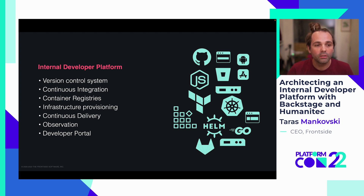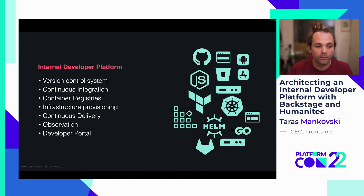That typically includes a version control system they use to push code, continuous integration pipelines they use to build container images, they push this into container registries, they provision infrastructure necessary to run their workloads, they use continuous delivery pipelines to deliver their workloads to Kubernetes, and typically they'll have observation mechanisms in place to observe the runtime execution of their workloads in the cloud. A lot of these things are visible and exposed in the developer portal with Backstage.